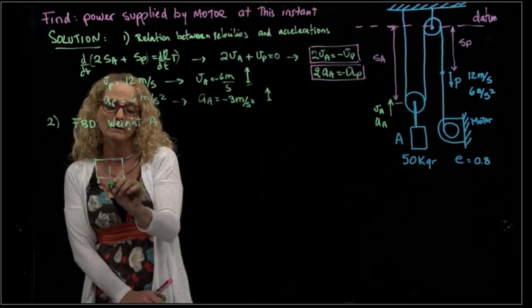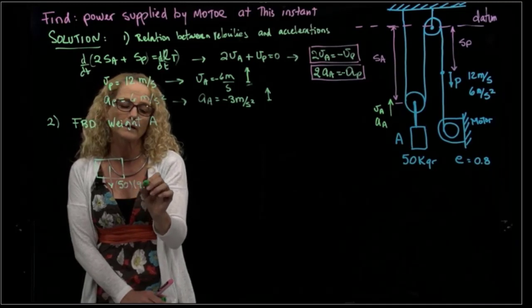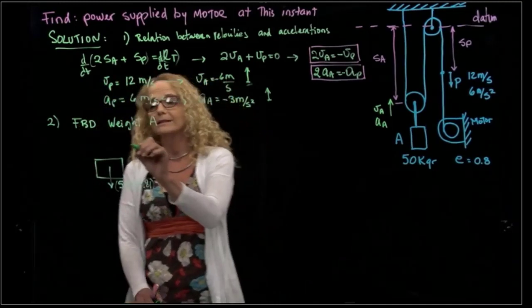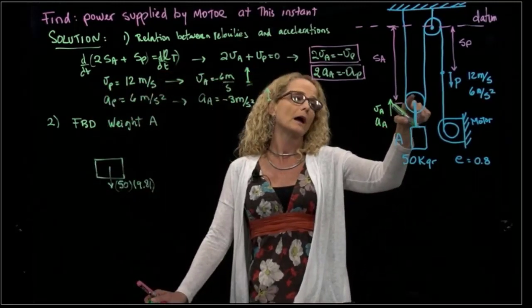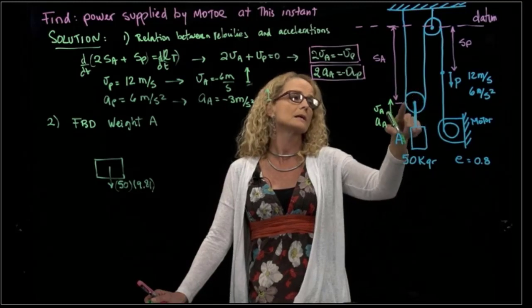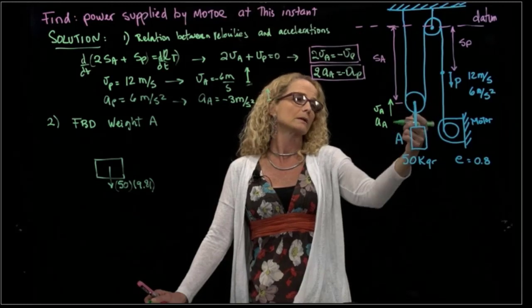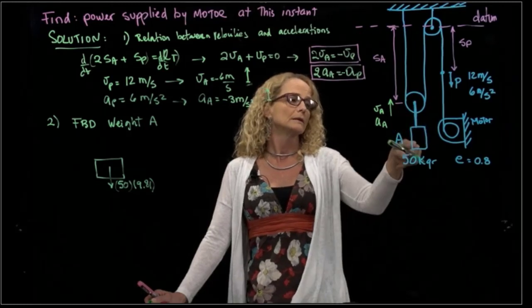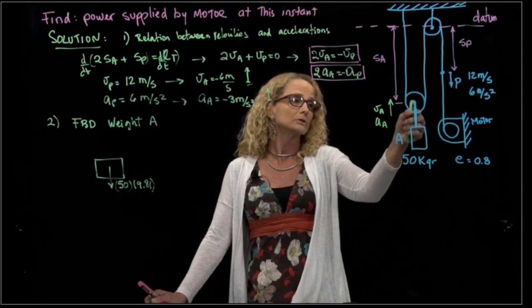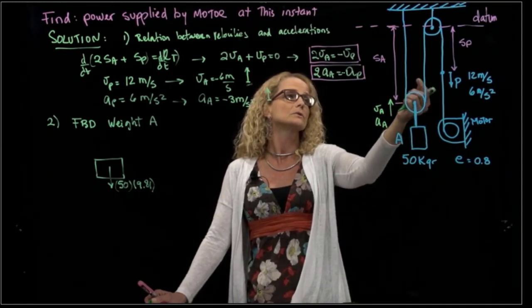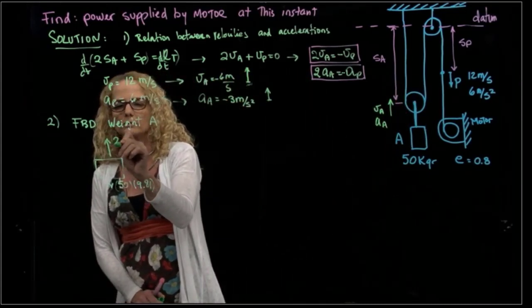I have the weight, which is 50 kilograms times gravity 9.81, and I have the tension. So if I do the free body diagram of that pulley, which doesn't have a mass, I have two tensions and that tension that goes downwards holding weight A. So I can say that this tension holding weight A equals two tensions of the cord. So I'm going to write that here: two tensions of the cord.